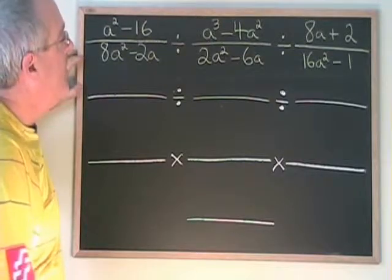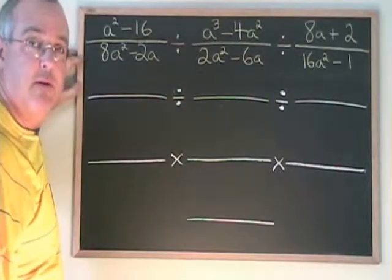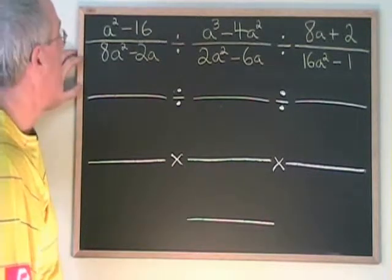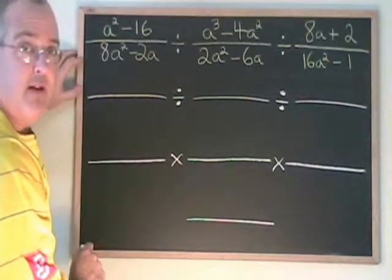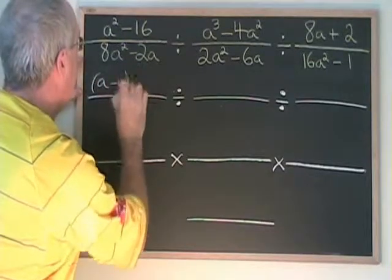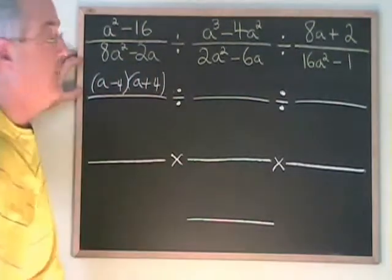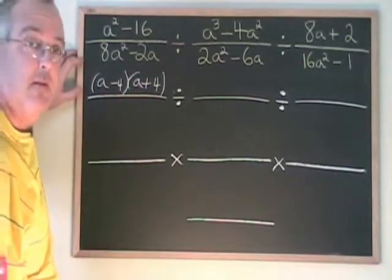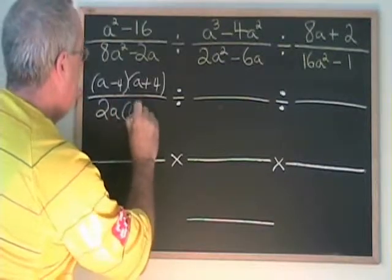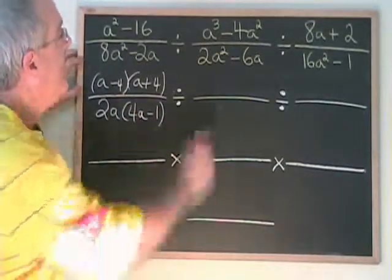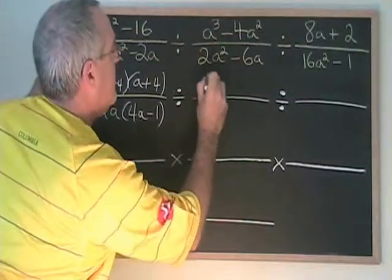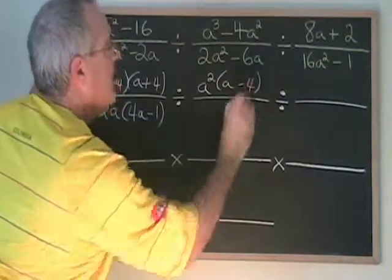In this example, we have two operations, both of which are divisions. The first step is going to be to factor everything as completely as we can. A squared minus 16 is the difference of squares and factors to (a minus 4)(a plus 4). 8a squared minus 2a is a common factor and factors to 2a(4a minus 1). A cubed minus 4a squared is also a common factor and factors to a squared(a minus 4).